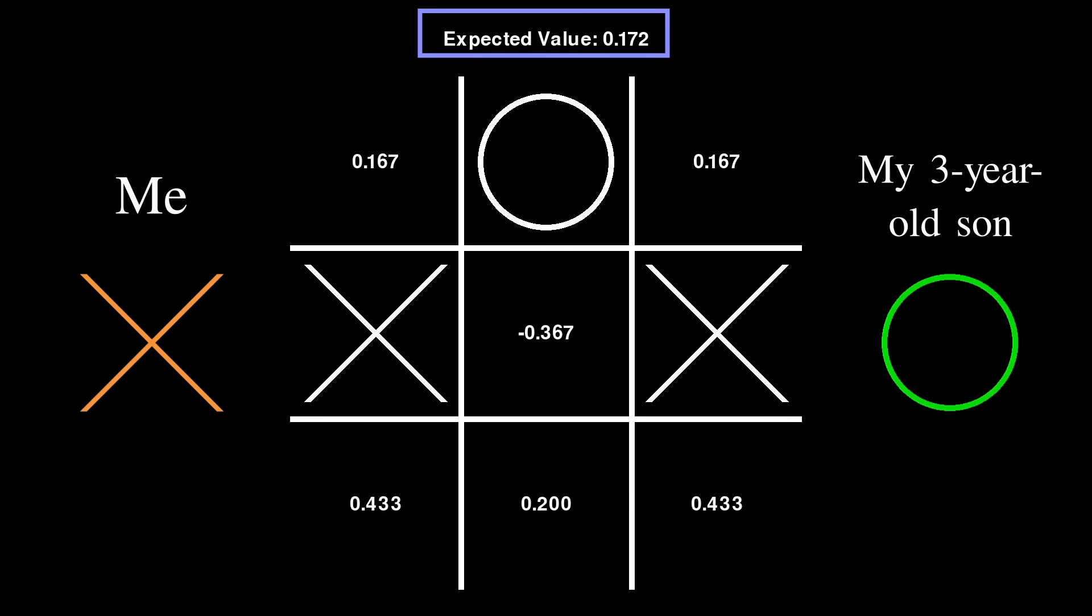Still an advantage for me, but we're making progress. At this point, my son spotted that I was on the verge of winning and blocked me with the center square. I was pumped. This reduced the expected value down to negative 0.367. Finally, he had the upper hand.